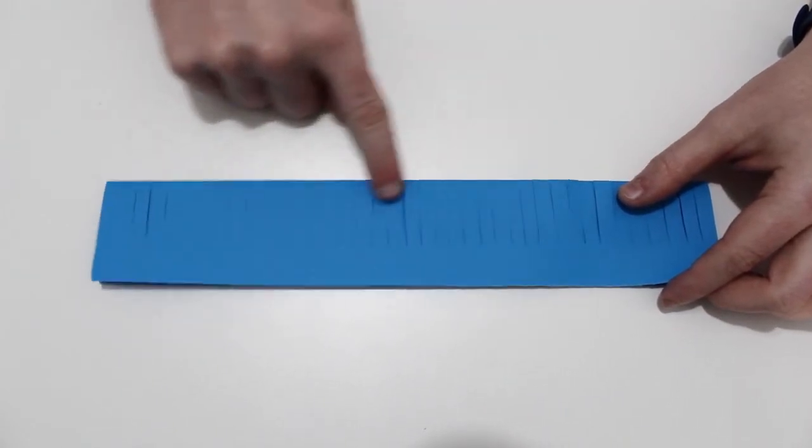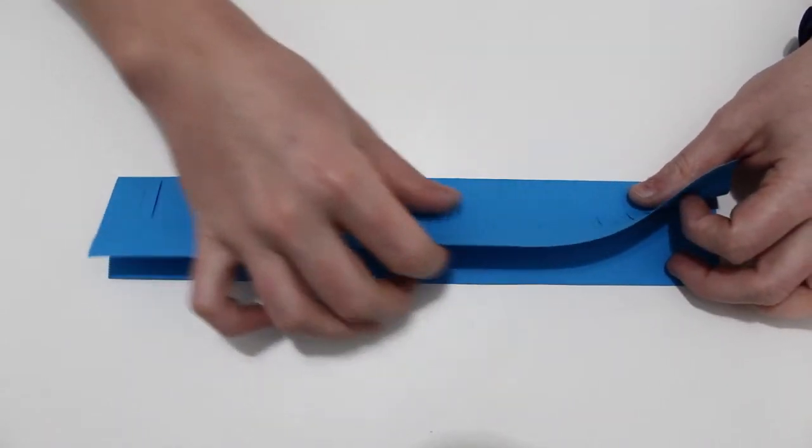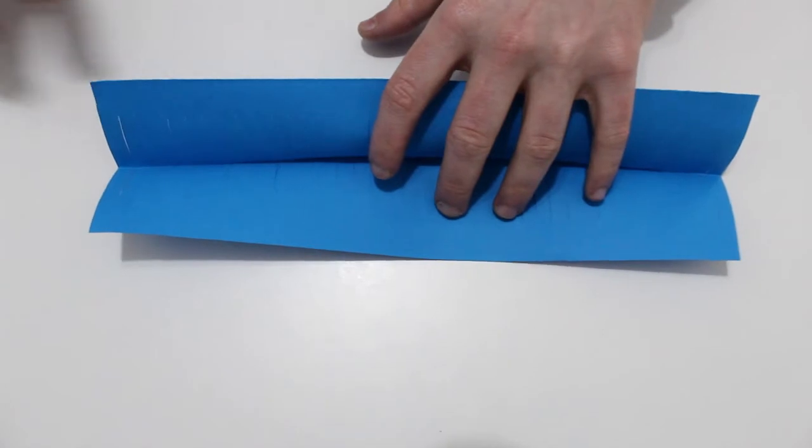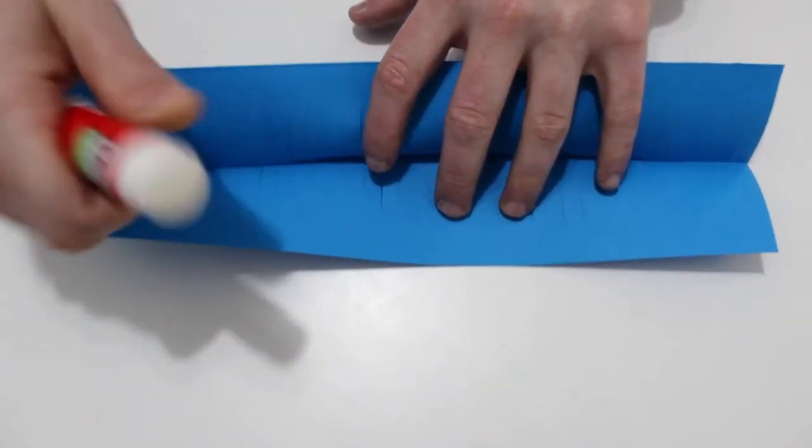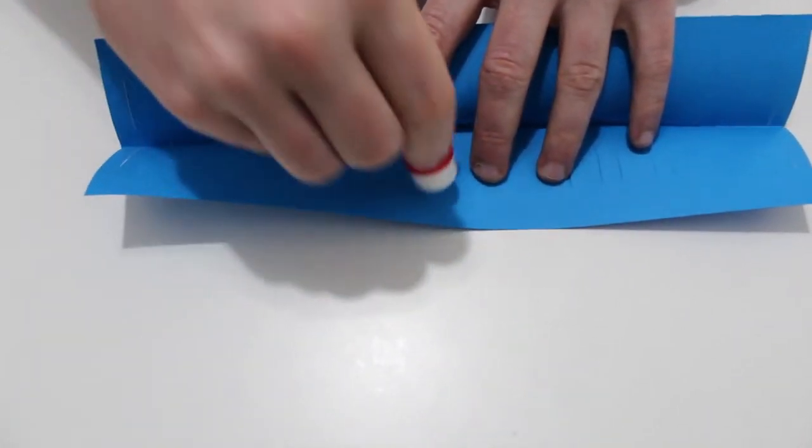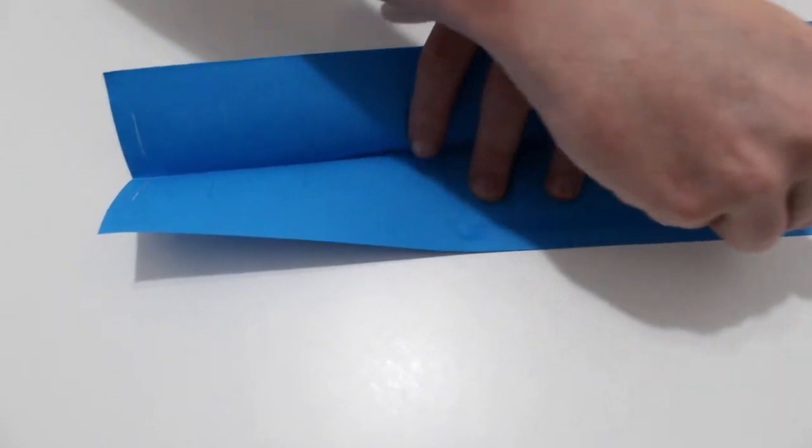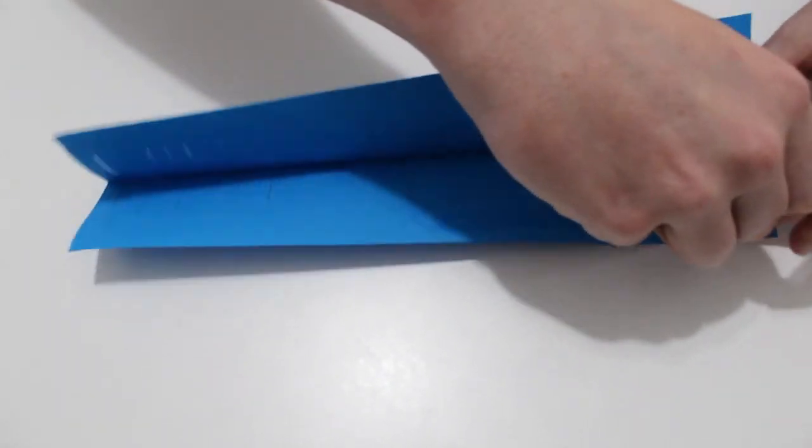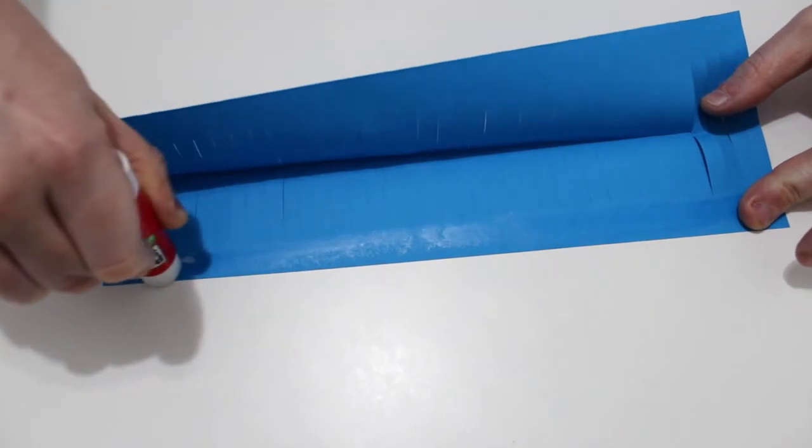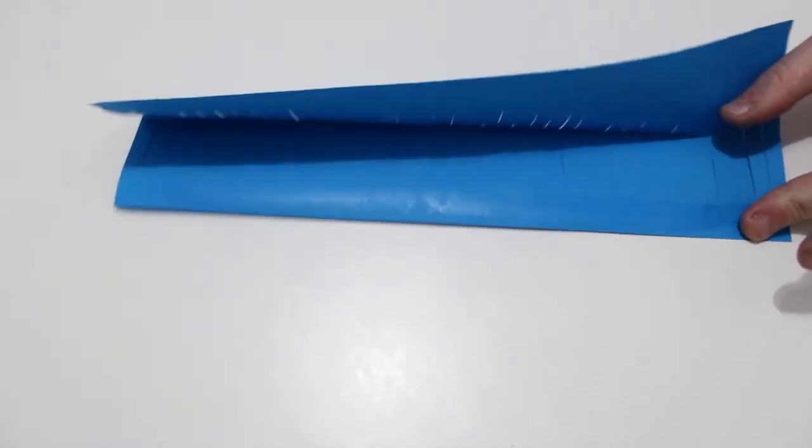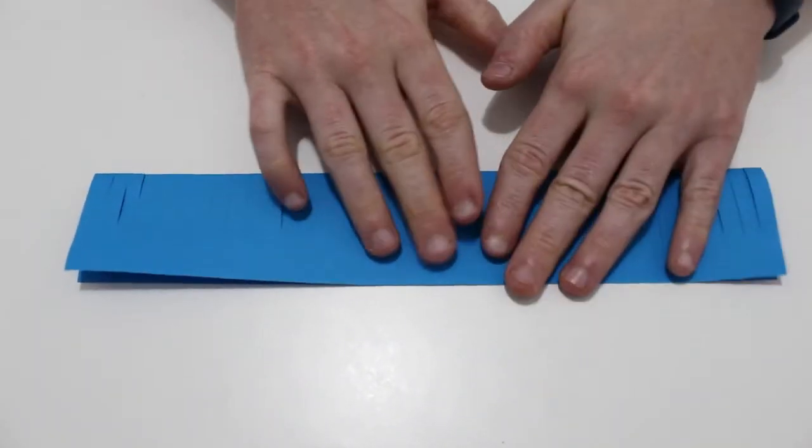Cuando ya tenemos todo el folio cortado, lo abrimos y vamos a ponerle pegamento en el ladito que no hemos cortado. Lo pegamos.